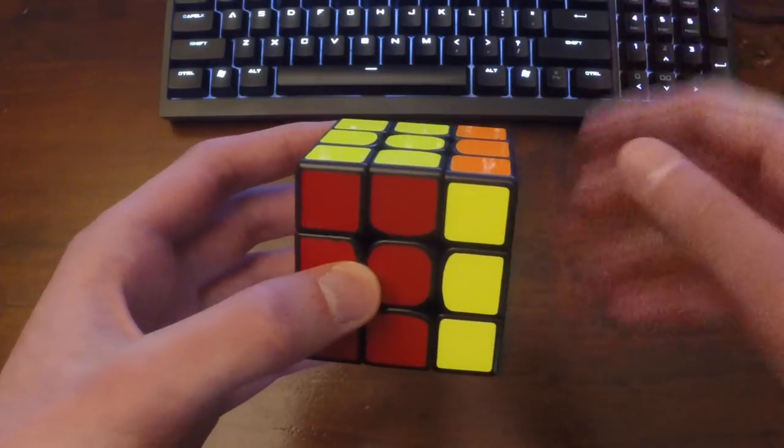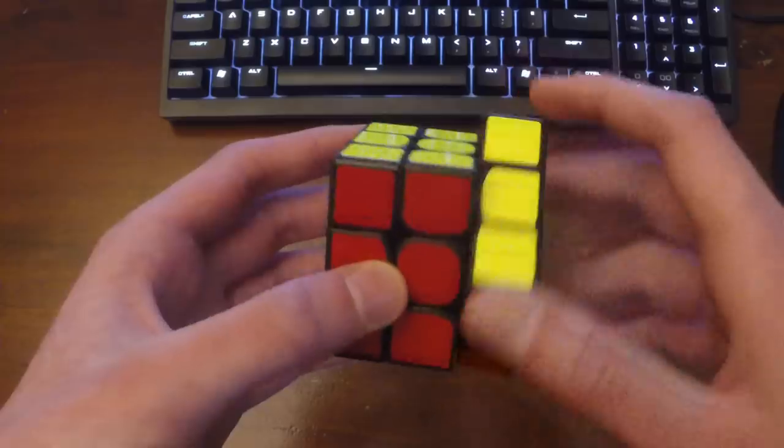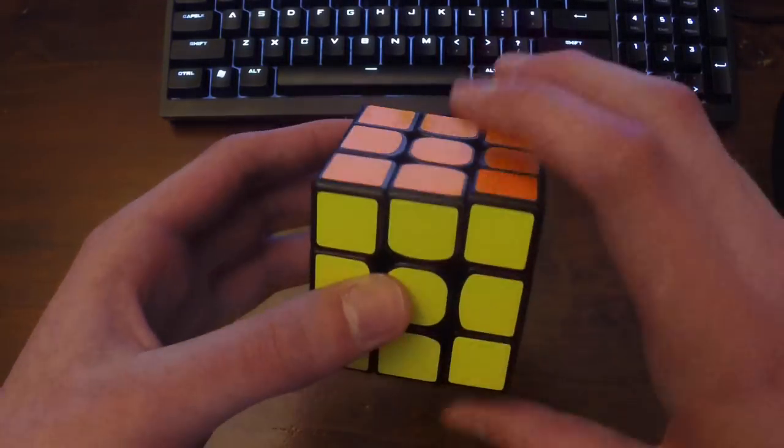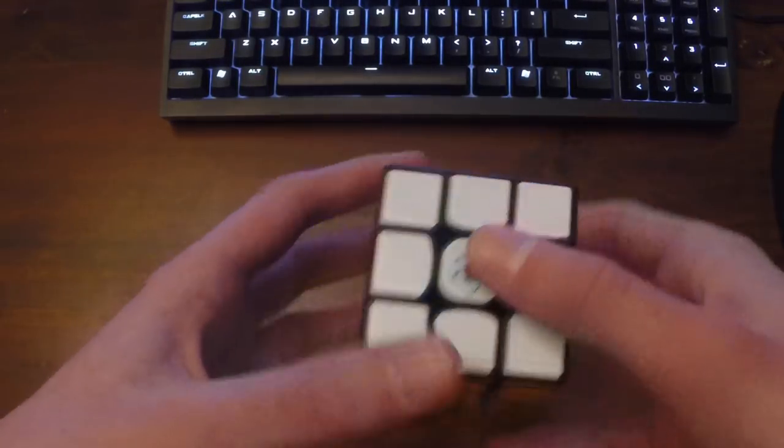So you see the clockwise movement of the R face goes up. So that's how you will rotate the cube in the X direction. And then X prime's this way, like an R prime.